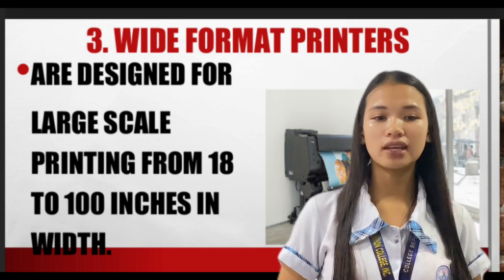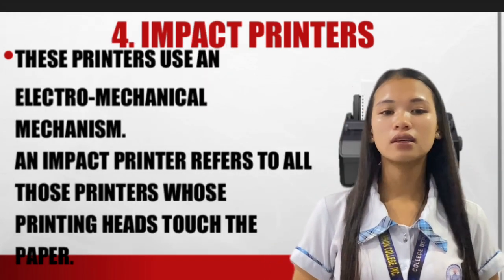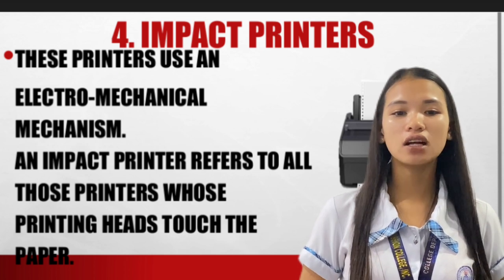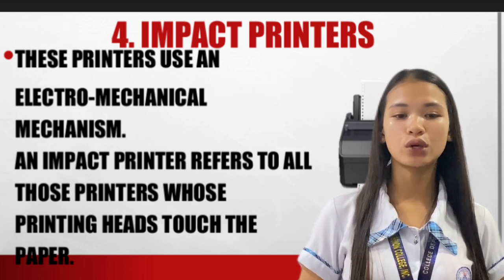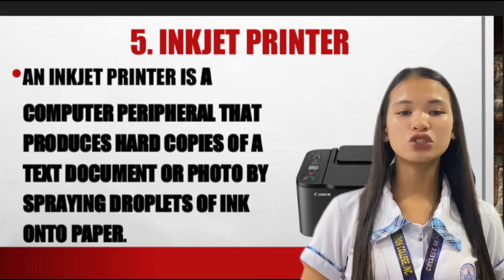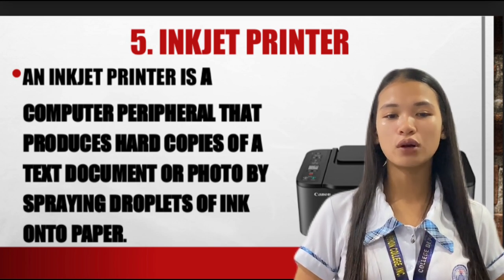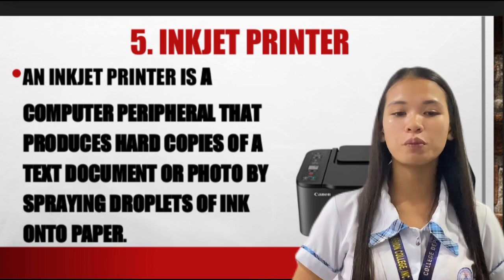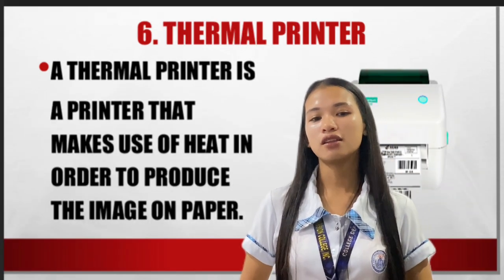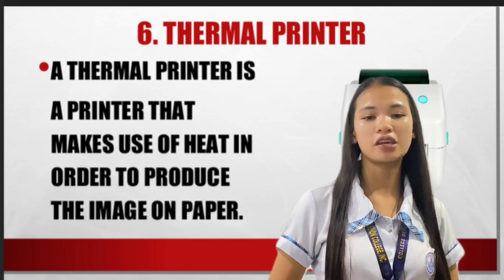The next one is the wide format printer, designed for large-scale printing from 18 to 100 inches wide. The fourth type of printer is the impact printer. This printer uses an electromechanical mechanism, and its printing heads touch the paper. The fifth one is the inkjet printer — a computer peripheral that produces hard copies of text, documents, or photos by spraying droplets of ink onto paper. The sixth one is the thermal printer, a printer that makes use of heat in order to produce the image on paper.